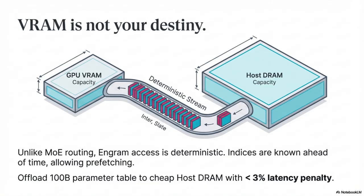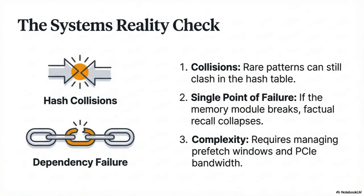Every good architecture needs a reality check. The first critique: collisions and polysemy. Multi-head hashing and gating help a lot but aren't perfect — a collision could still retrieve a plausible but wrong piece of information that the gate doesn't quite mute. The second: memory cannot replace compute. If you put too much of your budget into memory, you starve the thinking experts. The model gets really smart about facts but kind of stupid about logic.